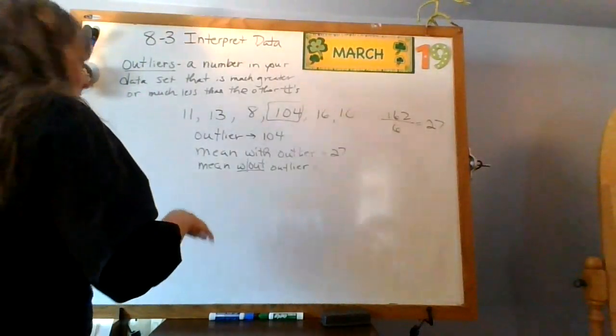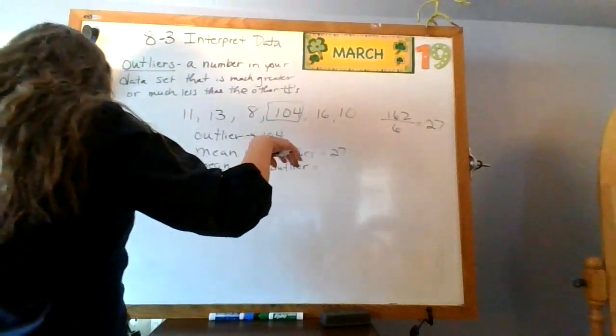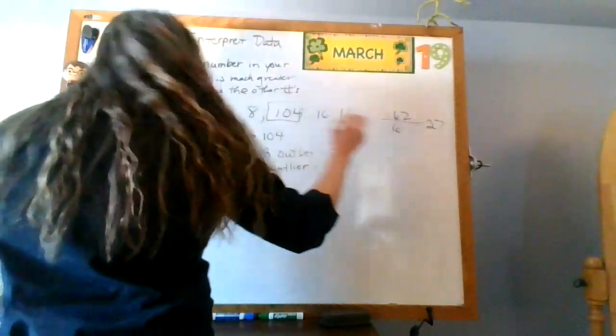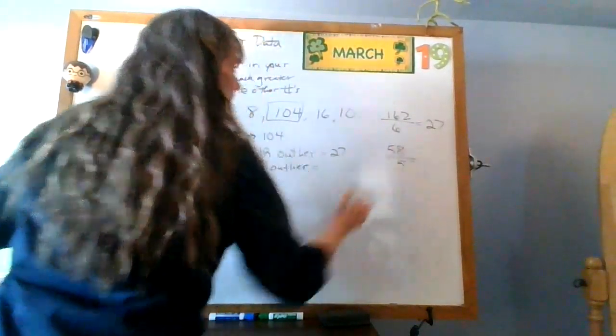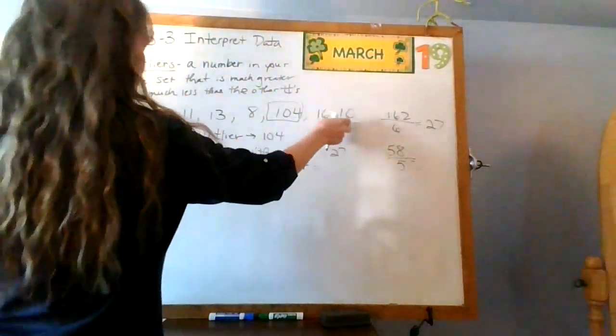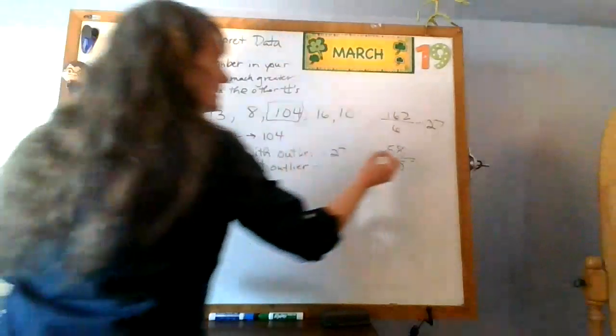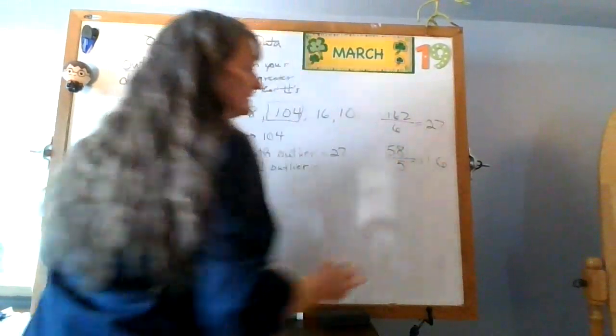Okay, so now I add them up without the 104. And, what I find is I get 58. There are 5 of them, right? 1, 2, 3, 4, 5 without the outlier. That is 11.6.